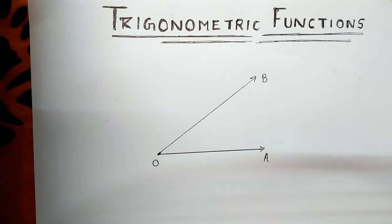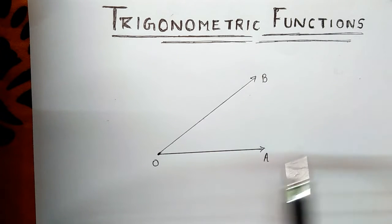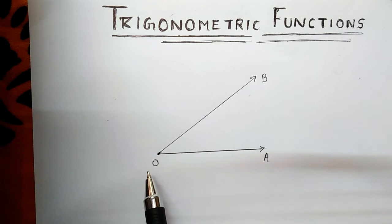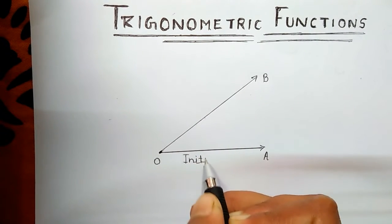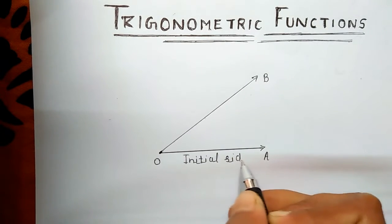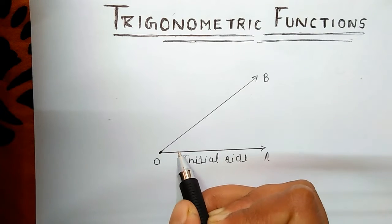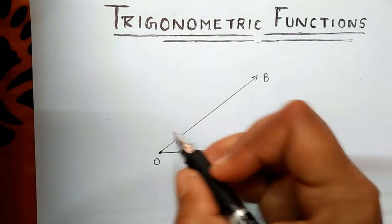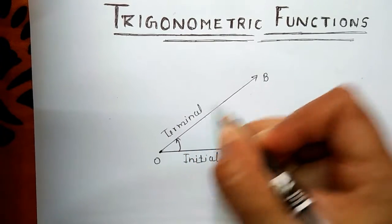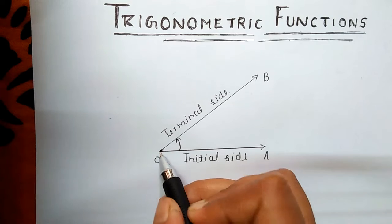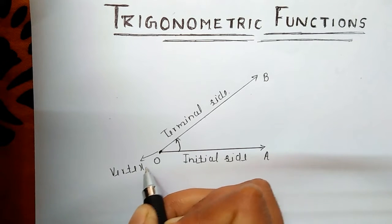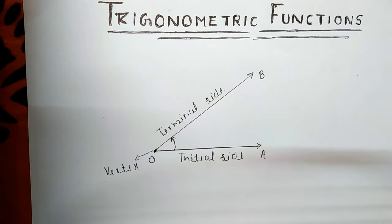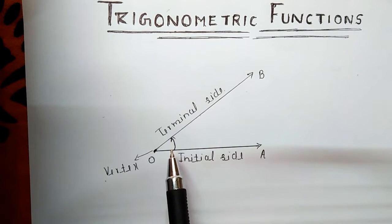What is an angle? An angle is a measure of rotation of a given ray about its initial point. Here, ray OA is the initial side of this angle, and the rotation starts from there. This is the terminal side and this is the vertex.